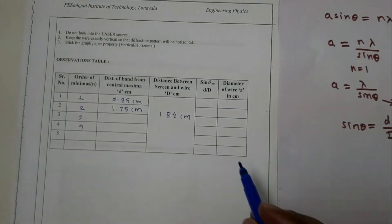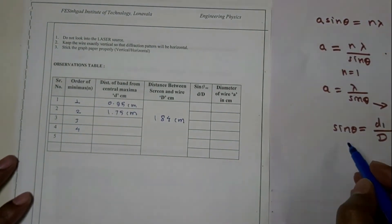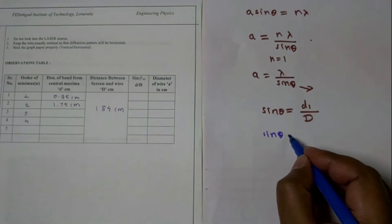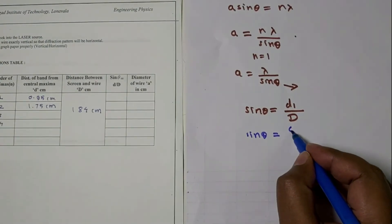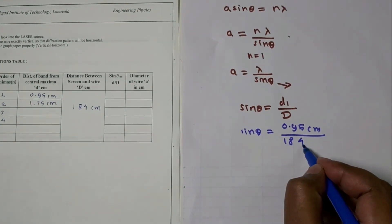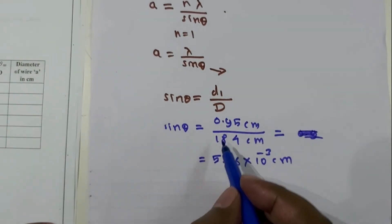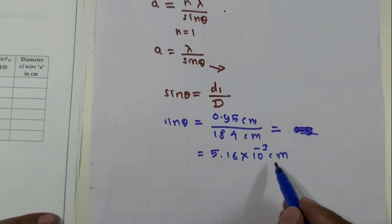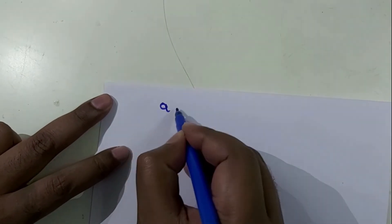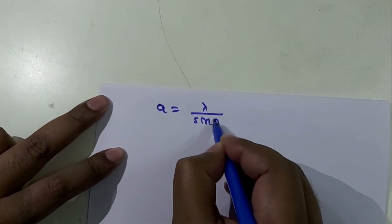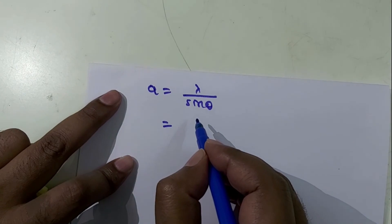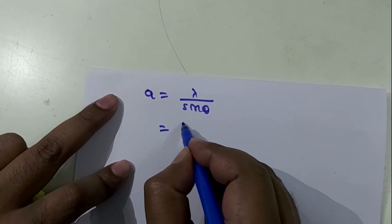For the first reading, sinθ = d1/D = 0.95 centimeters divided by 184 centimeters, which gives sinθ = 5.16 × 10⁻³. Now we know the slit width a = λ/sinθ. The wavelength of helium-neon laser light is 6328 angstroms, which in centimeters is 6328 × 10⁻⁸ centimeters.